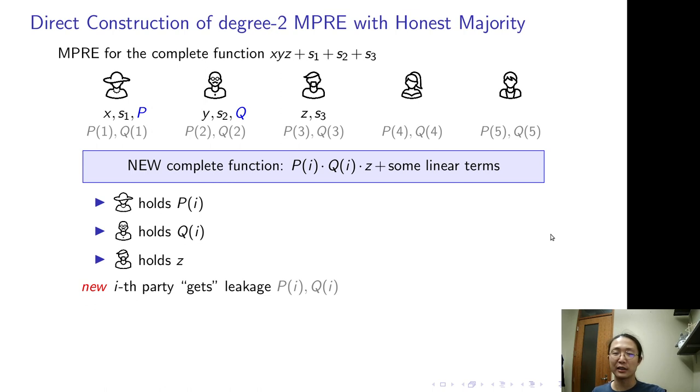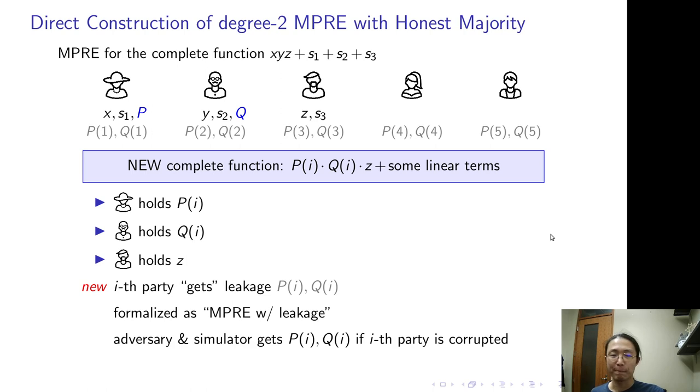We formalize it as MPRE with leakage in our paper. Intuitively, it means we don't have to hide P(i)Q(i) from the i-th party. We can give the adversary P(i)Q(i) for free if the adversary corrupts the i-th party.